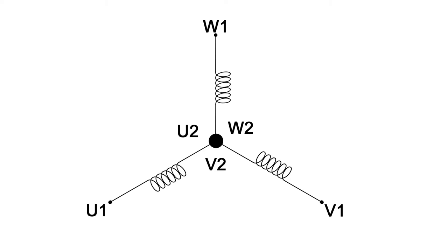First of all, we're going to look at connecting the motor in star. To connect the motor in star, we need to identify the three windings and then connect W1, U1 and V1 as a single connection on three separate terminals and W2, U2 and V2 together.